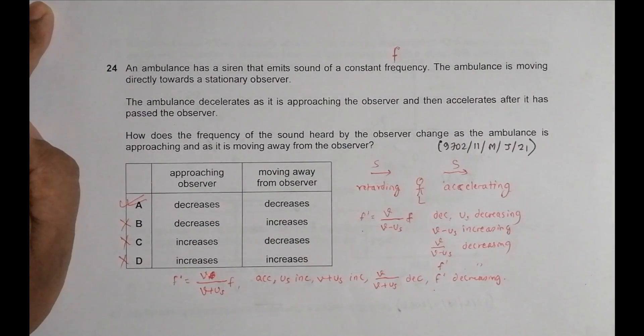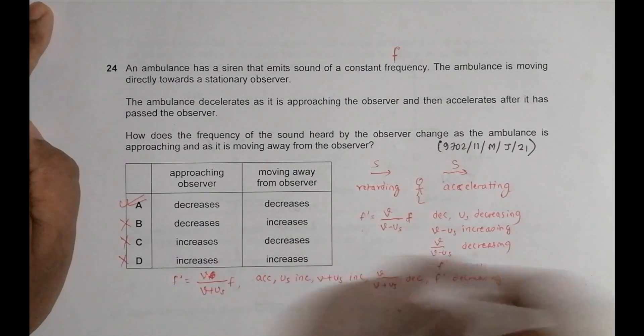So this question is a slightly twisting type of question. It's because when we say that source is approaching, the frequency increases, we somewhat say like that. So it's not only about that. It's not only about approaching or going away. It is about whether the velocity is increasing or decreasing, whether the velocity of the source is increasing or decreasing as well. So that is clarified by this question and these two formulas.